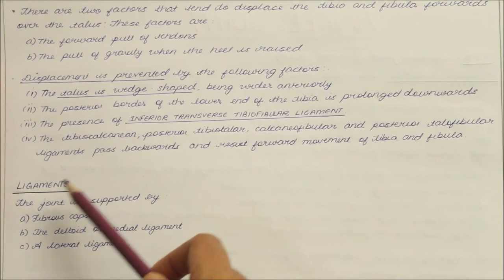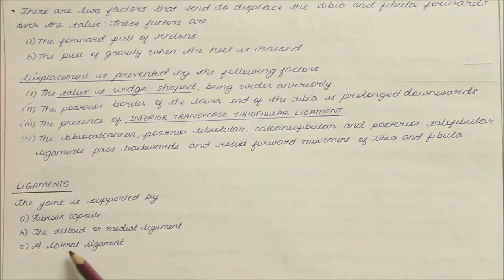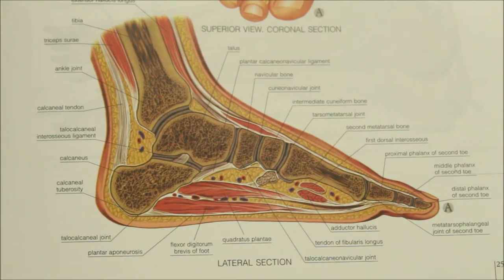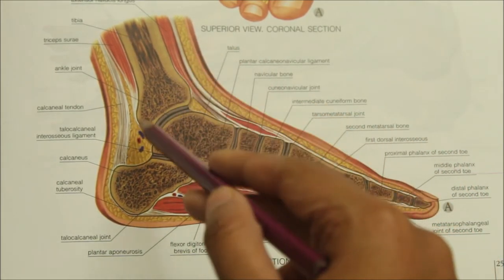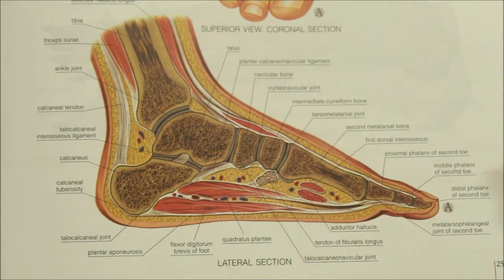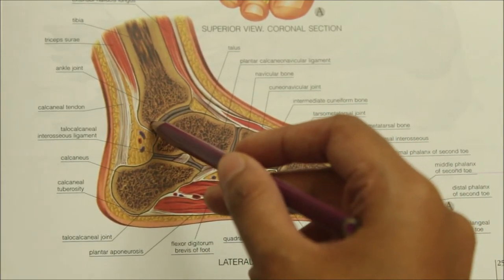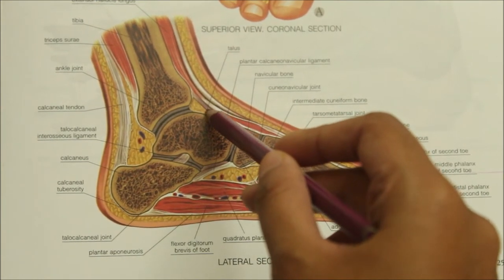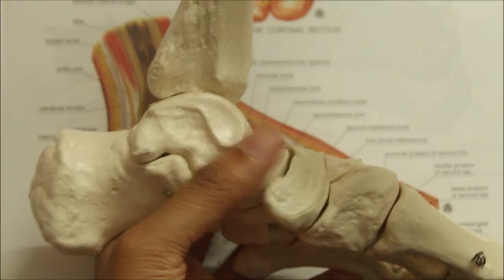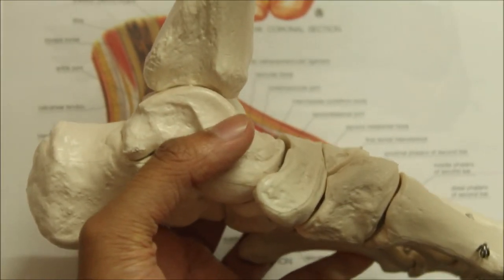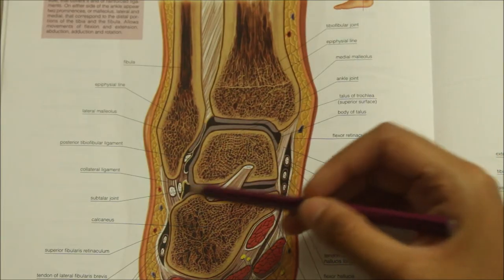Moving on to the ligaments of the ankle joint, the joint is supported by the fibrous capsule, the deltoid or the medial ligament, and a lateral ligament. The fibrous capsule surrounds the joint but is weak anteriorly and posteriorly. It is attached all around the articular margins with two exceptions: postero-superiorly it is attached to the inferior transverse tibiofibular ligament, and antero-inferiorly it is attached to the dorsum of the neck of the talus. The anterior and posterior parts of the capsule are loose and thin to allow hinge movements, and on each side it is supported by collateral ligaments.